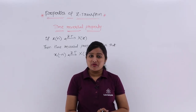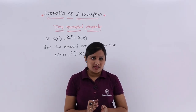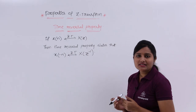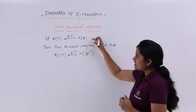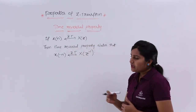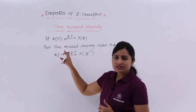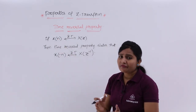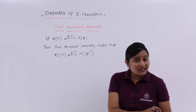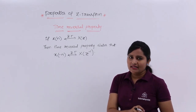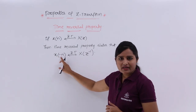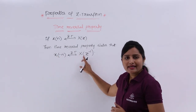In this video we are going to discuss the time reversal property of Z-transform. The property states: if X(n) is a discrete time sequence with Z-transform X(Z), then the Z-transform of X(-n) — the time-reversed version of X(n) — is equivalent to X(Z⁻¹).